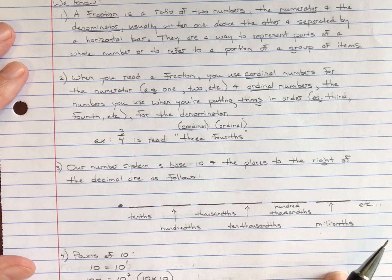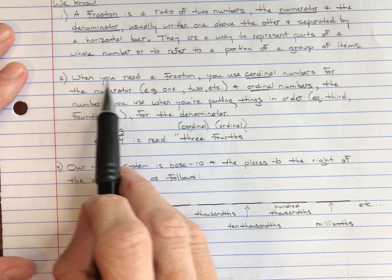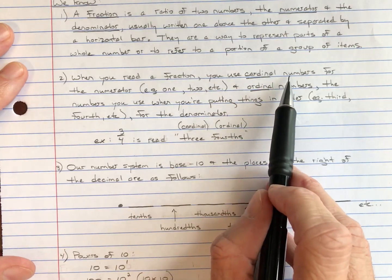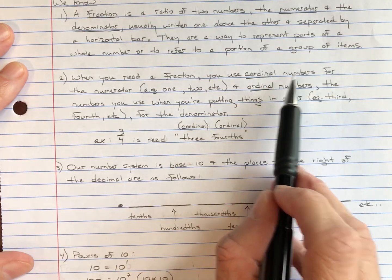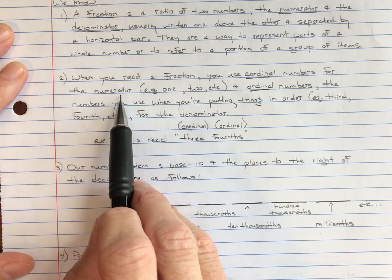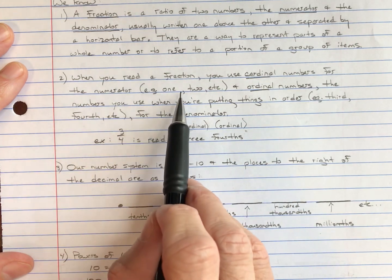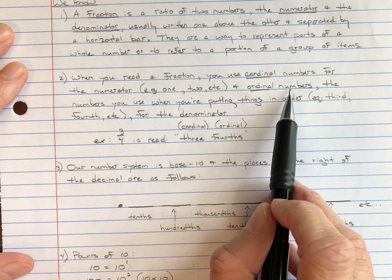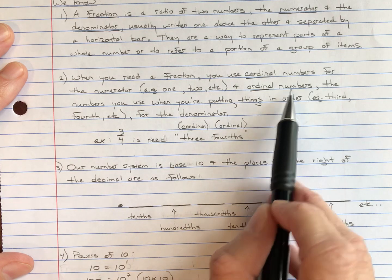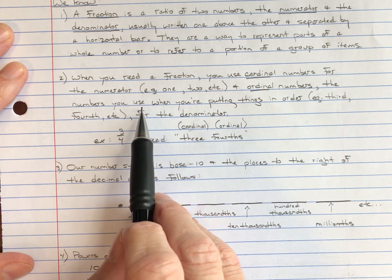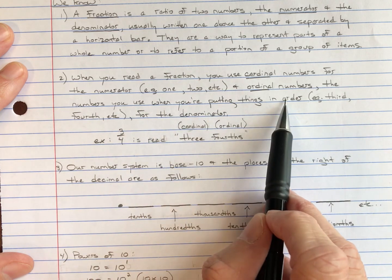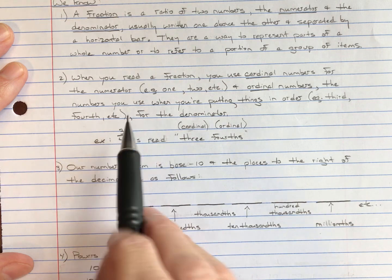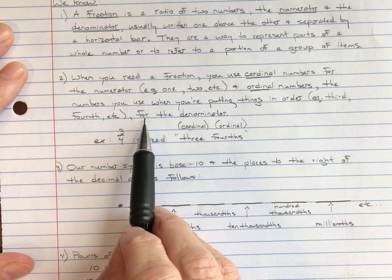The second thing we know: when you read a fraction, you use cardinal numbers — which tell you how many — for the numerator. For example: one, two, three, etc. And ordinal numbers — these are numbers you use when you put things in order, like third, fourth, tenth, etc. — for the denominator.